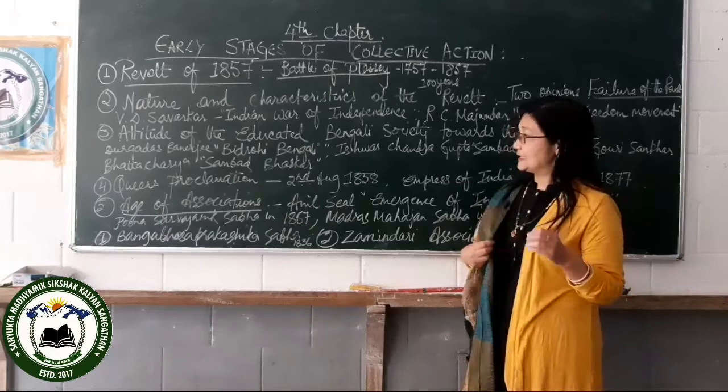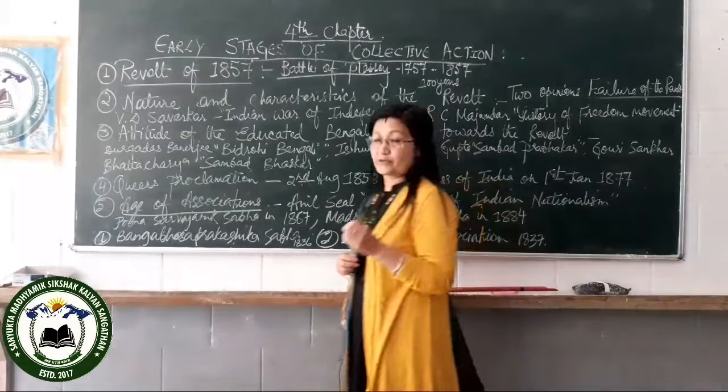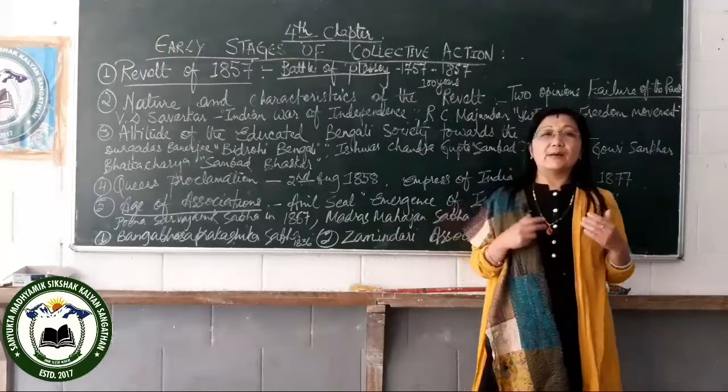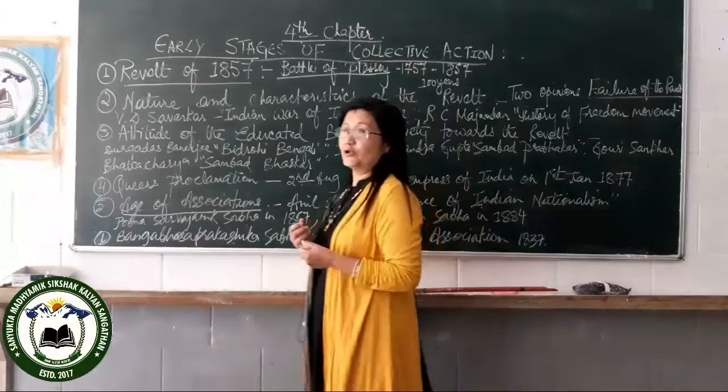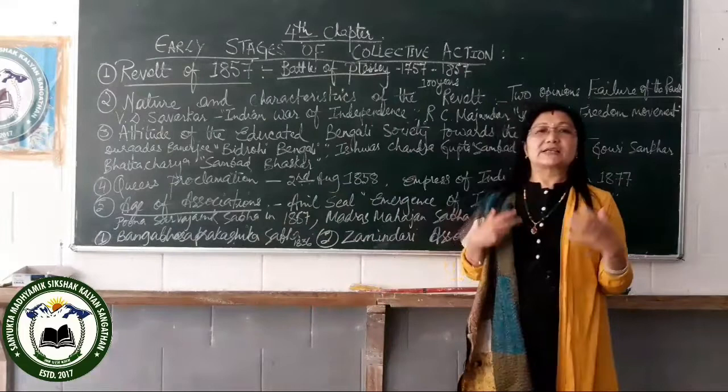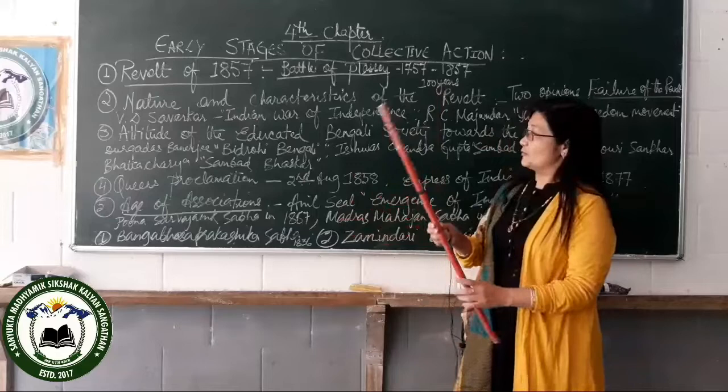The next topic is the associations — the age of associations. As I told you in the last class, if you want to be updated and intelligent, you have to read books and associate with intelligent people. At this time, intelligent people not only wrote books but also formed many associations in order to voice the grievances and opinions of the people.